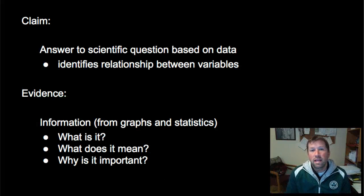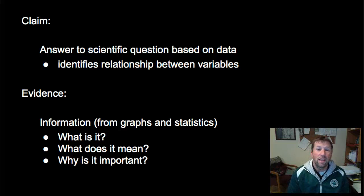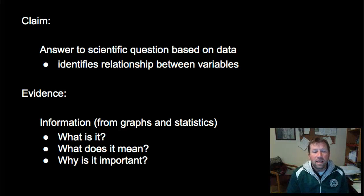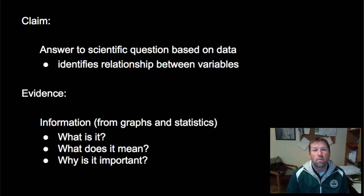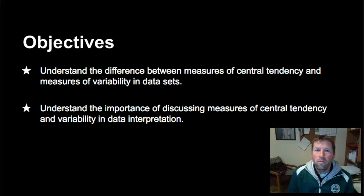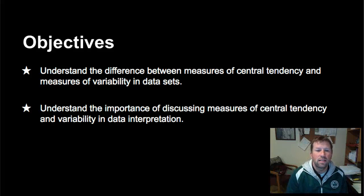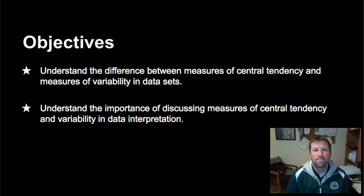A claim is just an answer to a scientific question based on the data. The claim identifies the relationship between the variables but doesn't necessarily explain that relationship, and the claim itself doesn't include the evidence — it just states what the relationship is and answers the question being asked. Evidence is our information from graphs and statistics that backs up the claim. When we look at evidence we ask: what is the evidence, what does it mean, and why is it important? Hopefully you got some insight into our two objectives: understanding the difference between central tendency and variability, and understanding why you have to discuss both when looking at a data set.